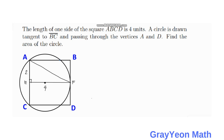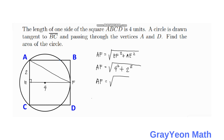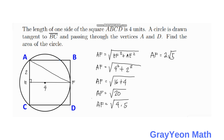For the hypotenuse AF, we calculate: AF is equal to the square root of 4 squared plus 2 squared, which equals the square root of 16 plus 4, so AF equals the square root of 20. Since 20 can be written as 4 times 5, taking the square root of 4 gives 2, so AF equals 2 times the square root of 5 units.